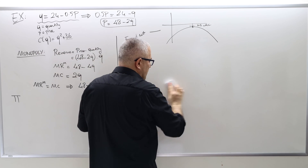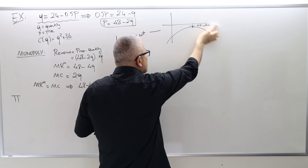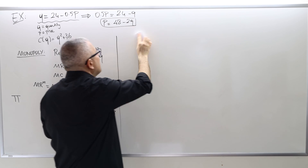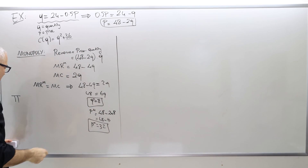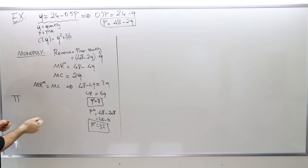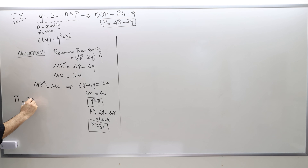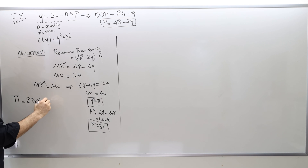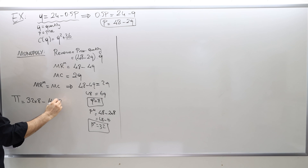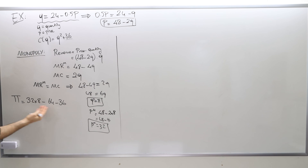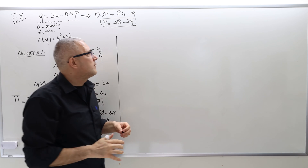Whenever you have a fixed cost, just be cautious — calculate the profit. With quantity 8 and price 32, the revenue is 32 times 8, and the cost is 8 squared plus 36, which is 64 plus 36. This has got to be higher than zero, and it is, so we're fine.